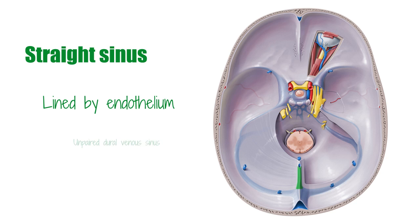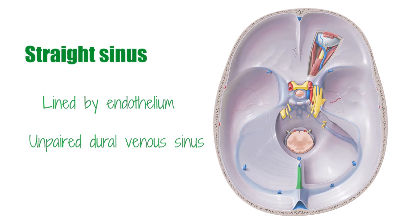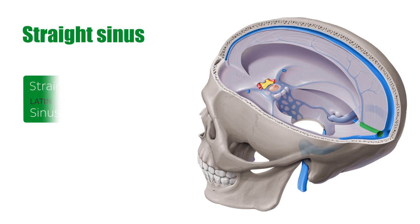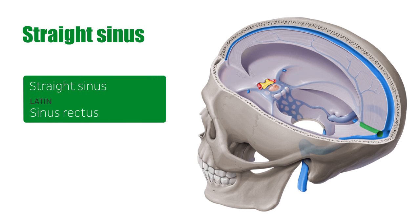The straight sinus is an unpaired dural venous sinus. The straight sinus, or sinus rectus in Latin, is also known as the tentorial sinus. It lies within the dura mater along the superior surface of the tentorium cerebelli, where the perpendicular falx cerebri forms a junction with the midline of the tentorium cerebelli.